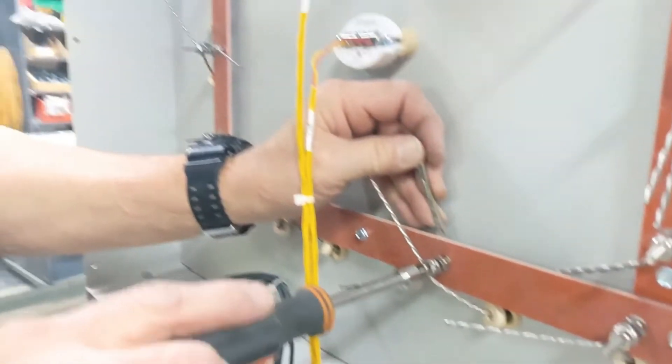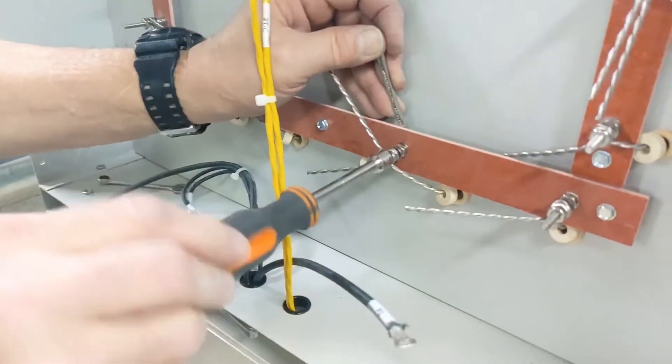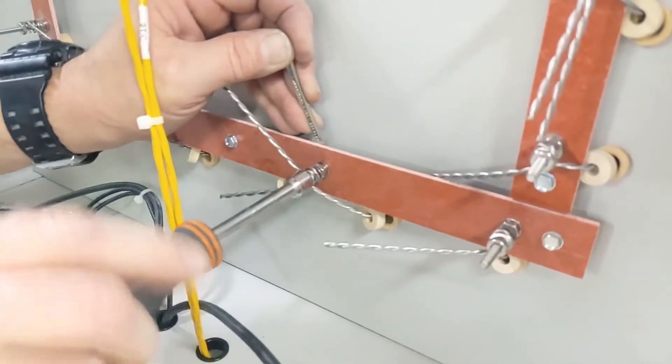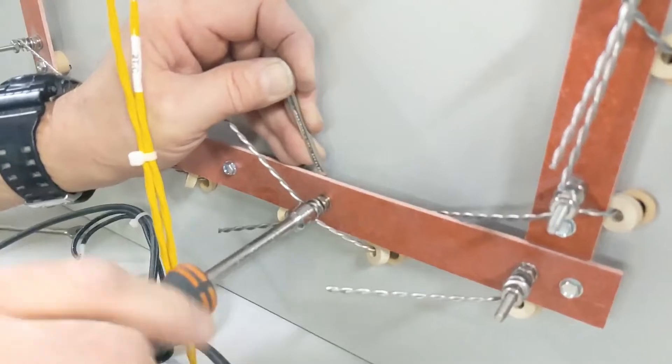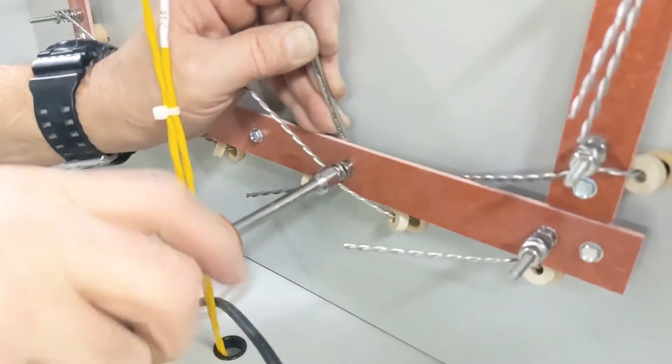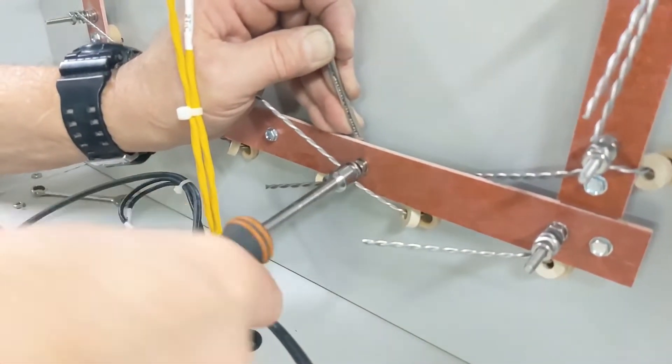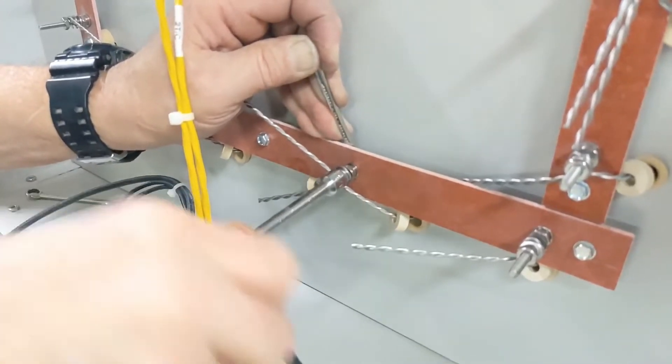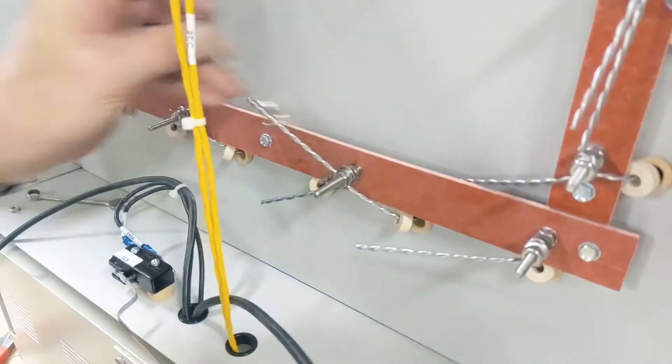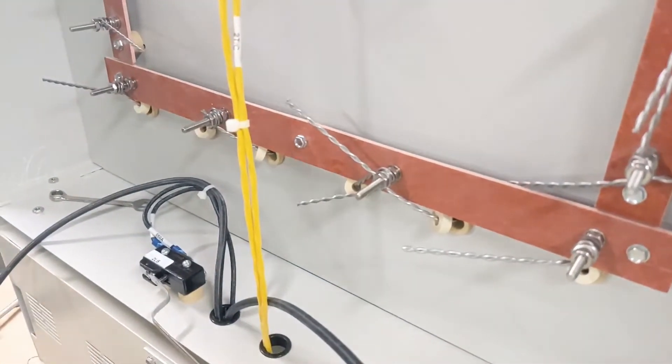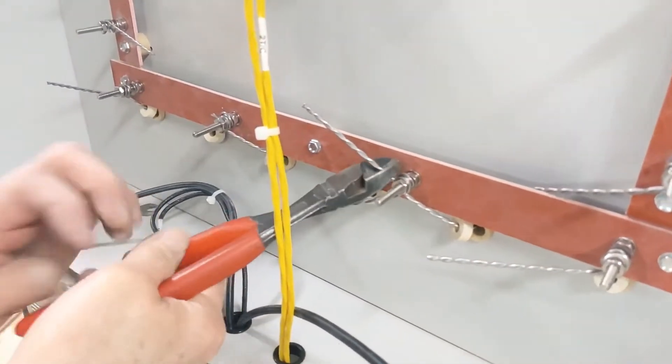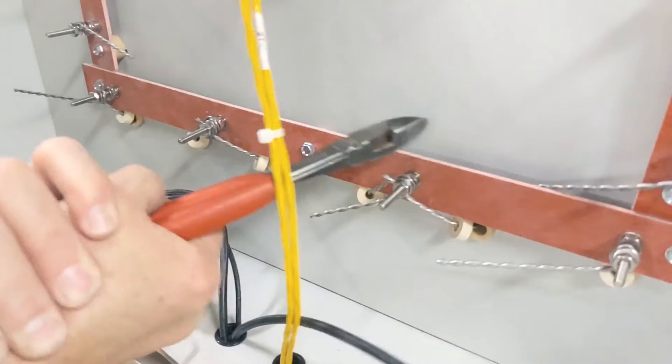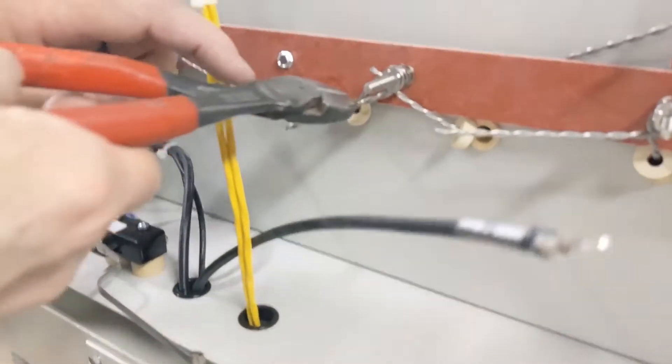Just showing the tightening procedure again. 5/16 wrench on the hex nut head behind the terminal board. 5/16 nut driver to tighten down the hex nut. You want to go about a half turn past hand tight. And then diagonal cutters to snip off the element tail.